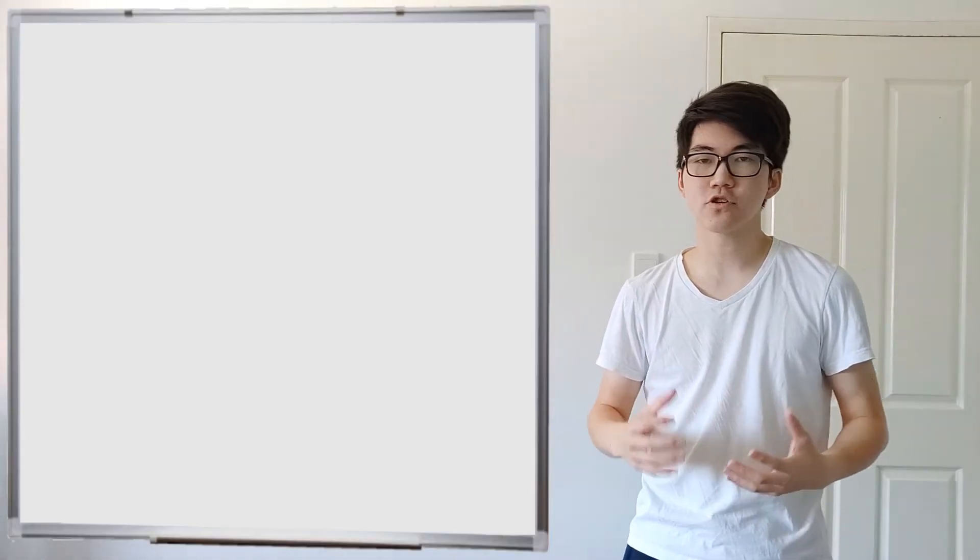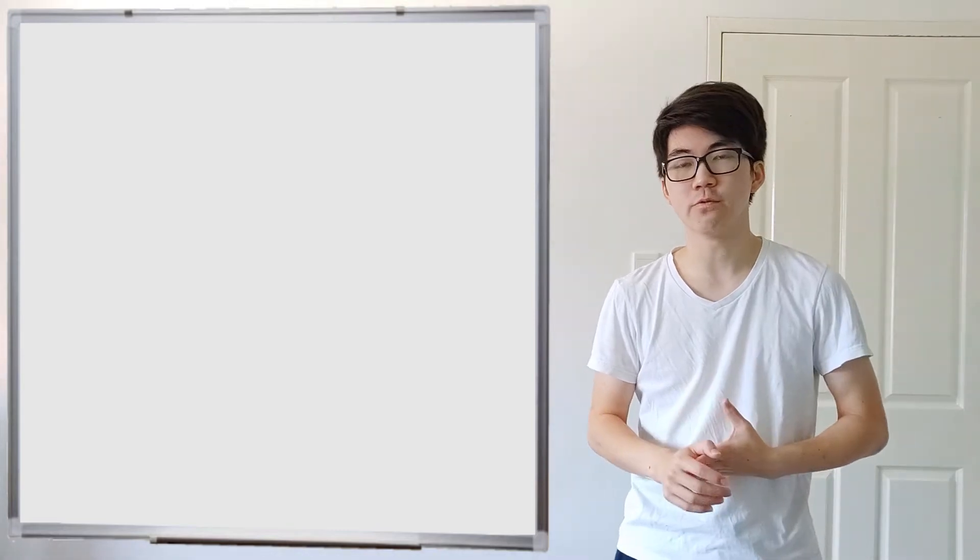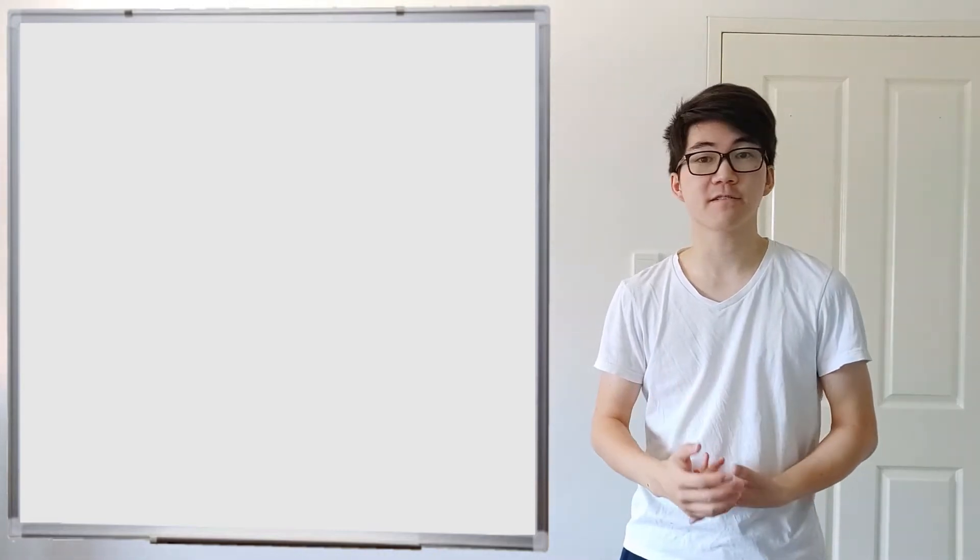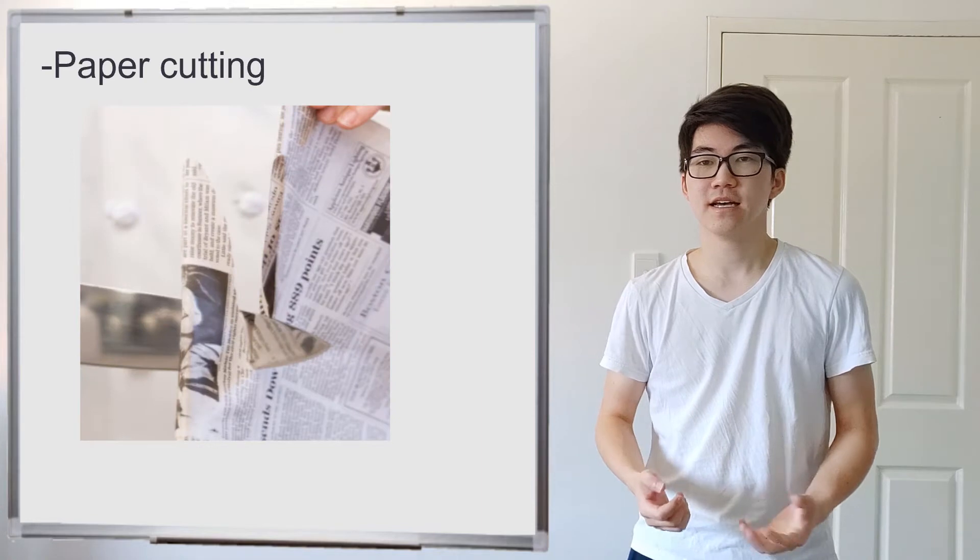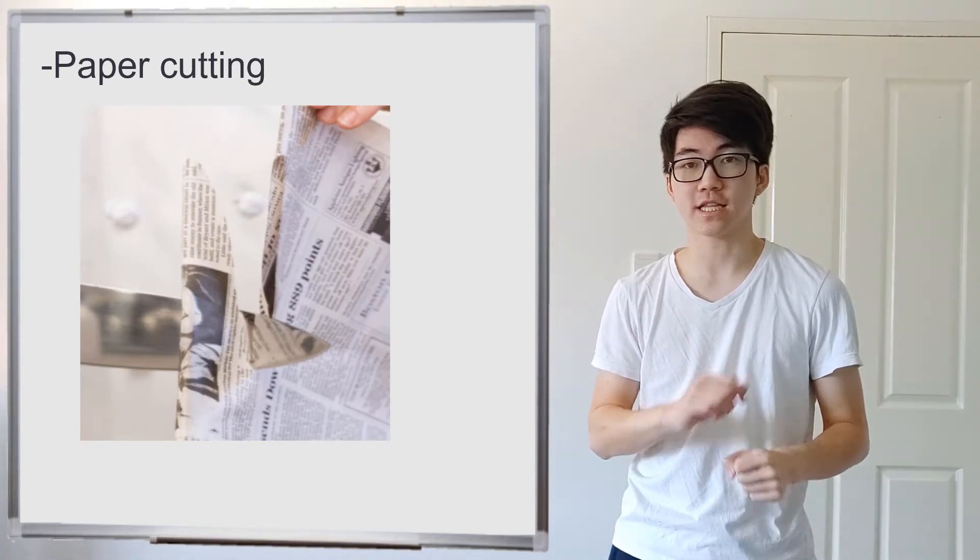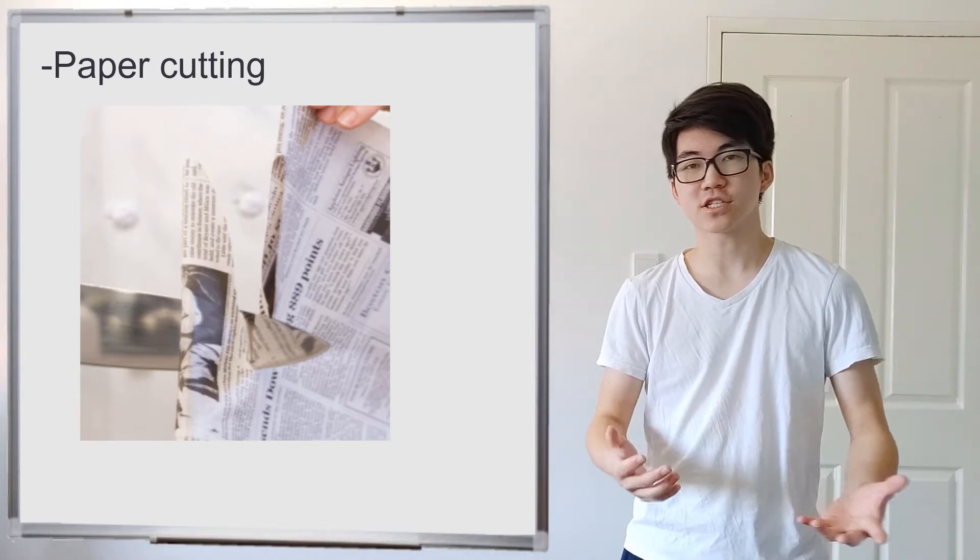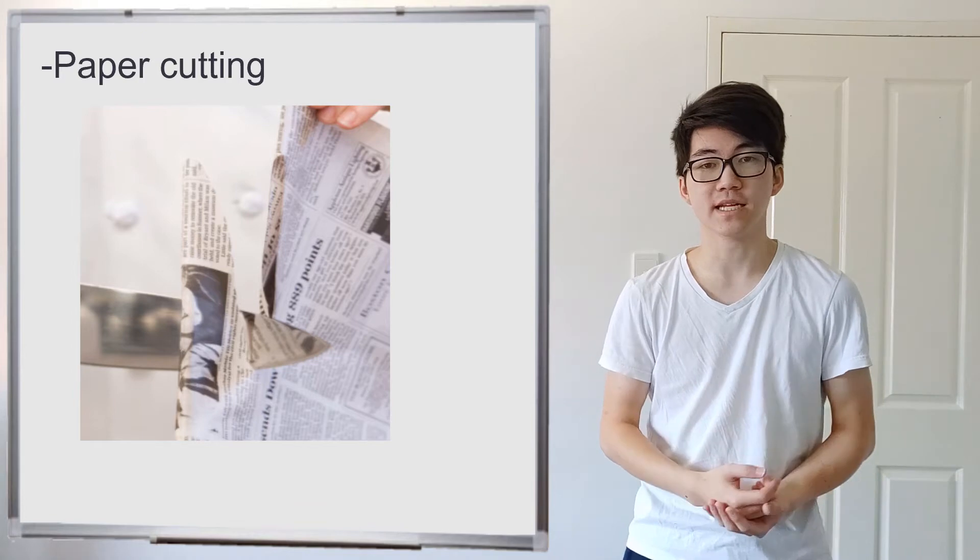So to start with, let's talk about the ways that we use to measure sharpness currently. One of the most common ways among the sword and knife community is paper cutting. So you get a piece of paper and you take your knife or your sword and you try and cut the paper perpendicularly. And if it cuts easily then it's sharp, if it doesn't cut or it starts tearing the paper then it's blunt.